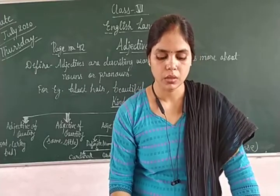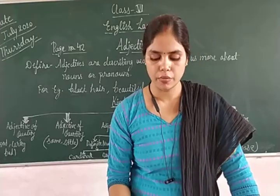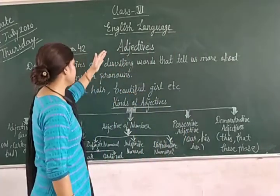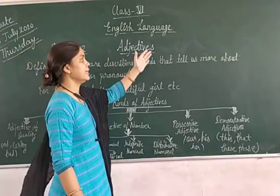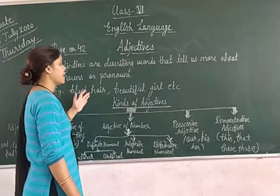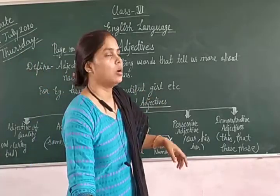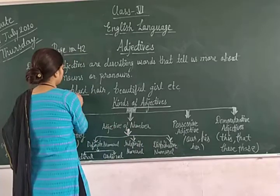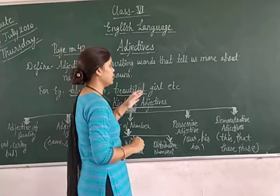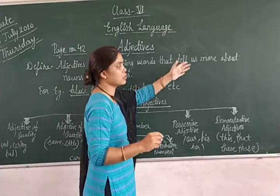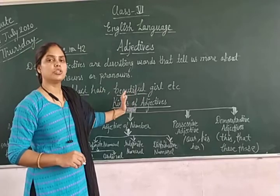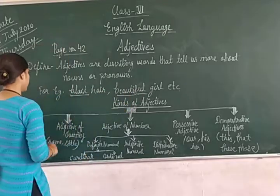Let me revise what I have told you. Adjectives are describing words that tell us more about nouns or pronouns. For example, 'black hair' and 'beautiful girl' — black and beautiful are adjectives, while hair and girl are nouns, because the adjective tells us more about the noun.